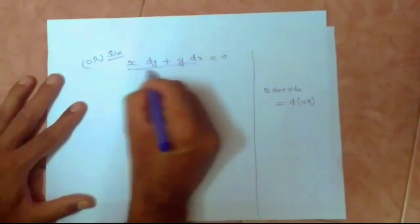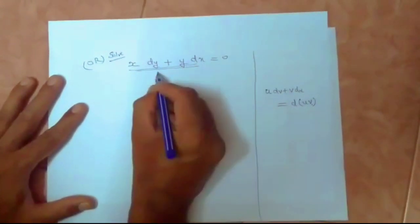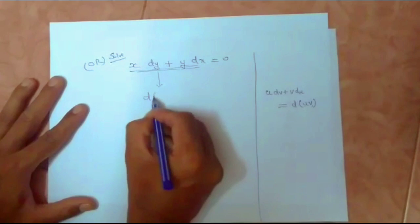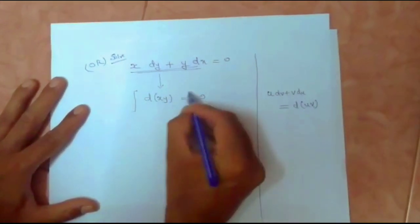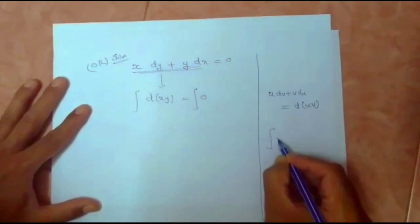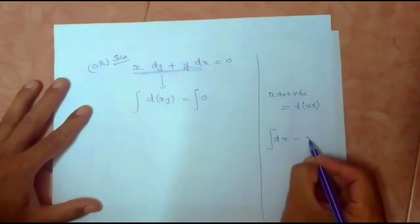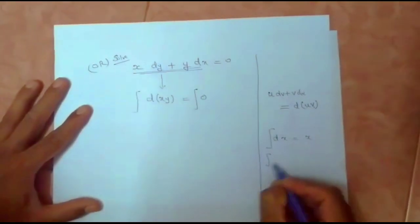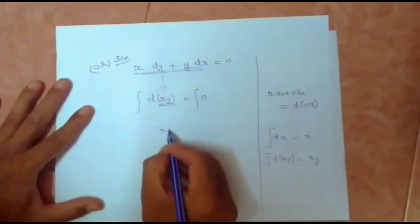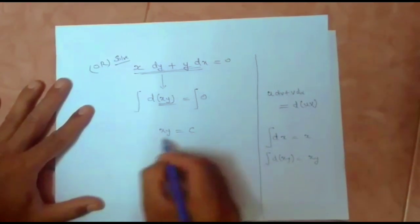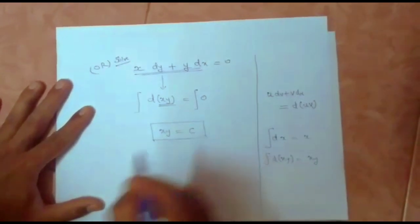So this expression x into dy plus y into dx, by using product rule, I can write this as d of xy equal to zero. We can integrate both sides. As you all know, integral dx is nothing but x, so integral d of xy is xy. Integral of zero is a constant. We get the solution simply.